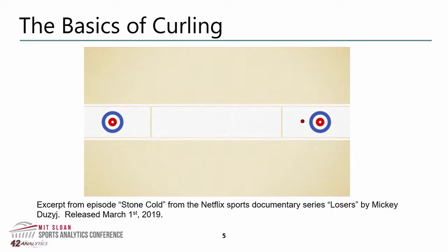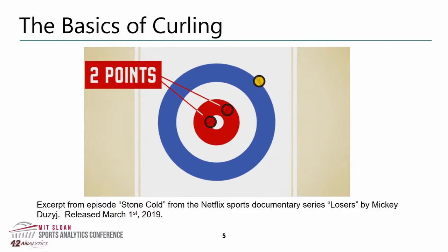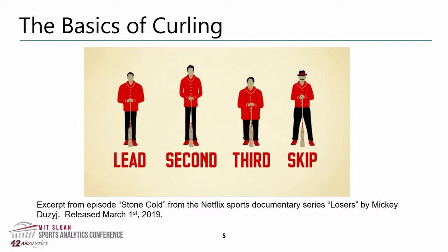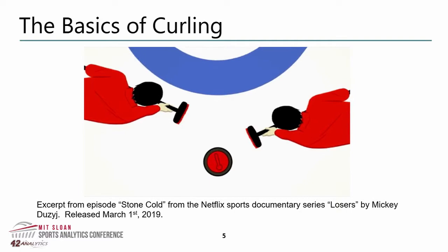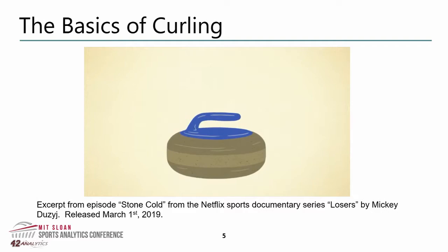The team with a stone closest to the button, or center of the rings, scores a point. A team can score multiple points if they have more than one stone closer to the button than their opponent. Each game is broken up into ten innings called ends. The four players are the lead, the second, the third, and the skip. The thrower pushes out of the hack and slides towards the target broom held by the skip. The other two players follow the rock and sweep with their brooms. Sweeping will limit the amount of curl and keep the rock straighter, or make it go further if it hasn't been thrown hard enough.